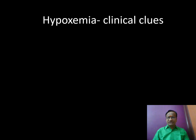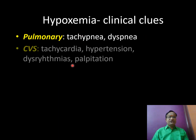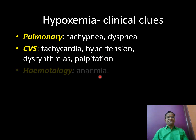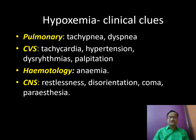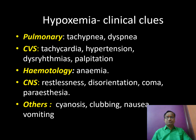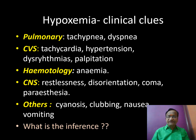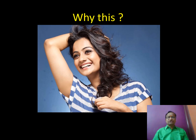What are the clinical clues of hypoxia? Tachypnea, dyspnea, tachycardia, hypertension, arrhythmia, restlessness, disorientation, and even nausea and vomiting. Anything can be an indication of hypoxia — the clinical picture is non-specific.